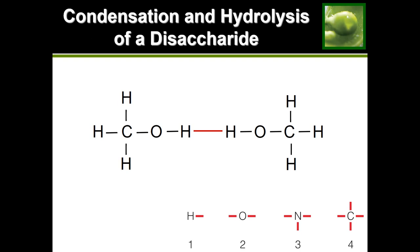This wouldn't really work directly, because this hydrogen already had its bond requirement met — it used its one bond to attach to oxygen. It doesn't have the capacity for a second bond. The same goes for the hydrogen on the other monosaccharide. We can't just add an extra bond because that would disturb the bond numbers. Instead, what we would have to do is remove some atoms so that we can free up bonds and use the existing bonds to attach them to each other.